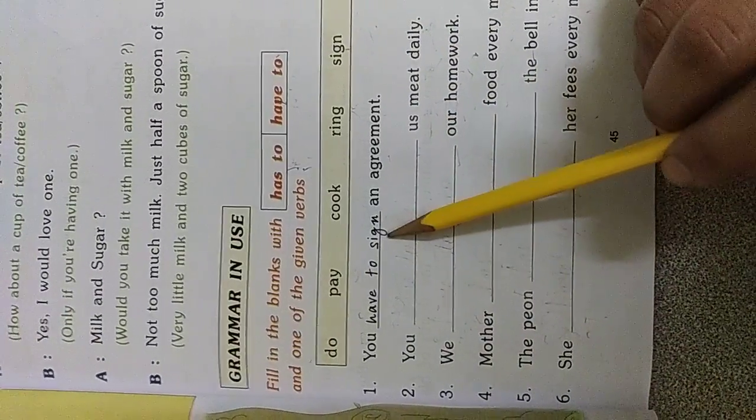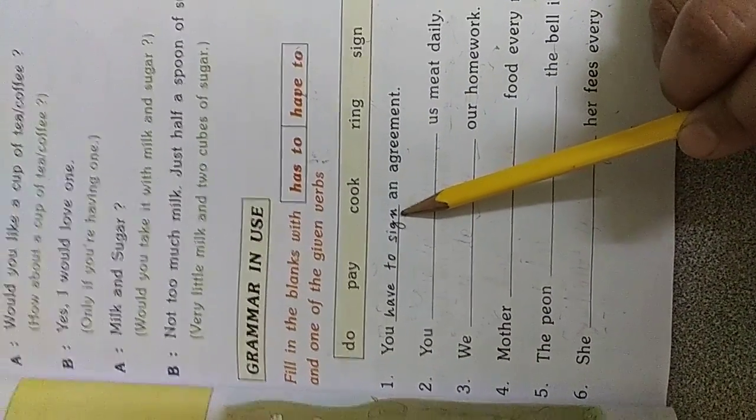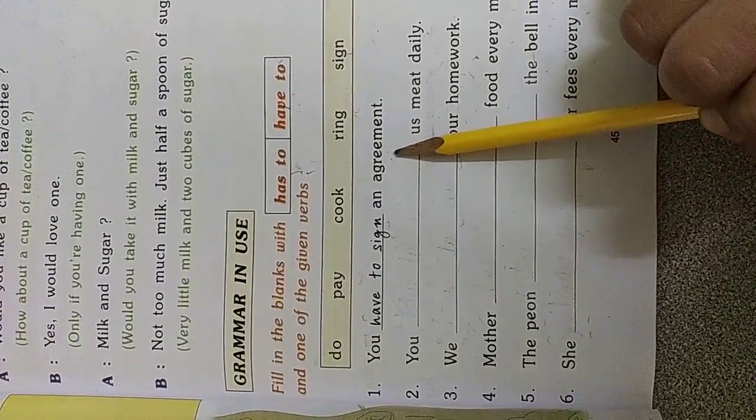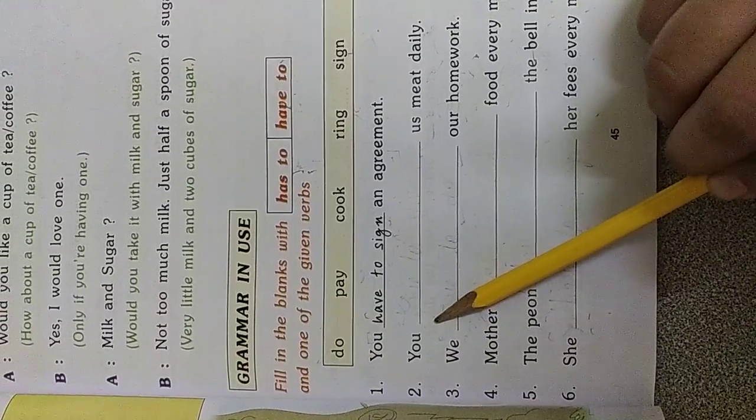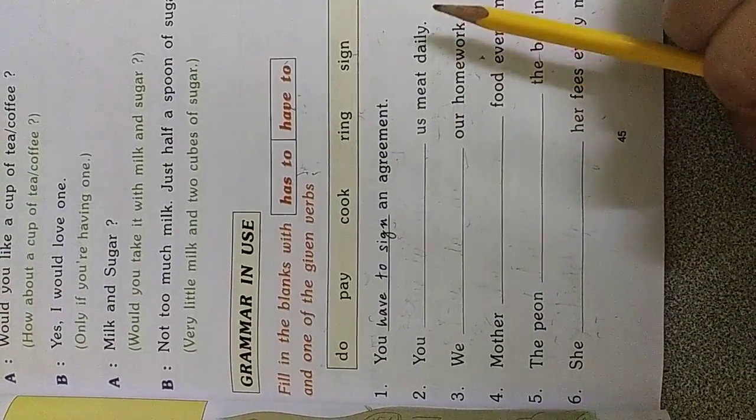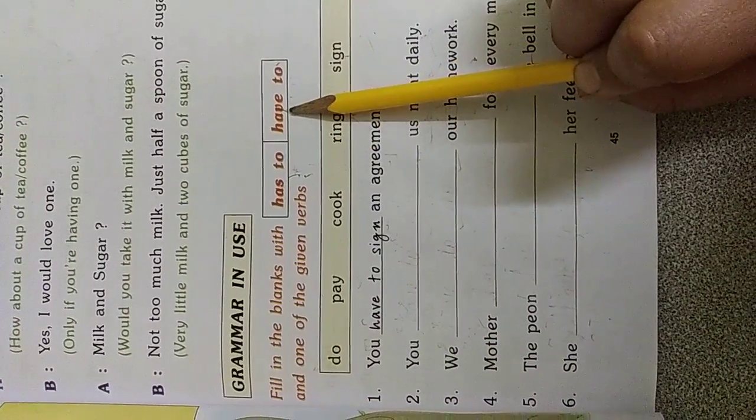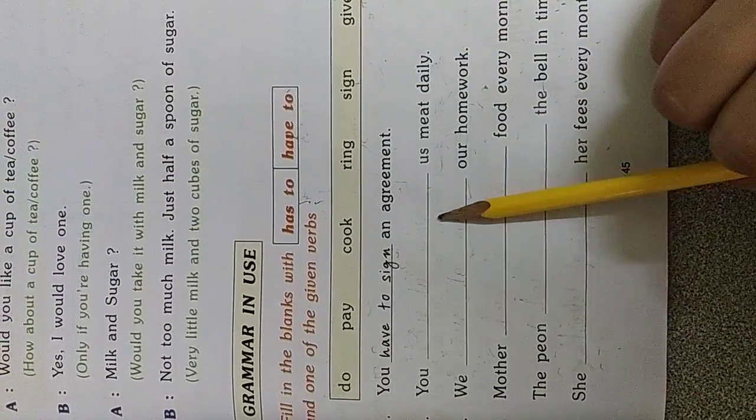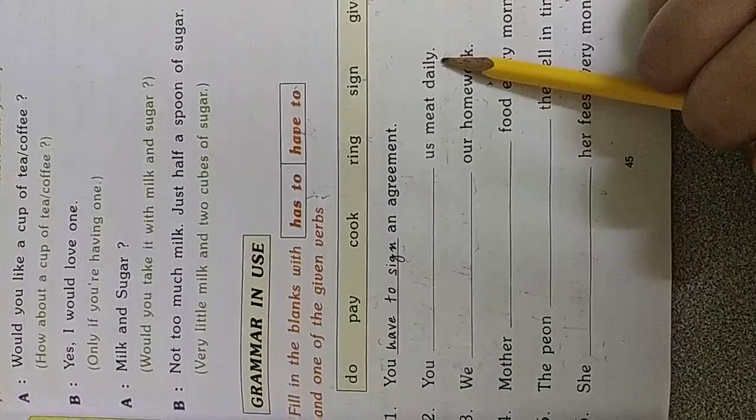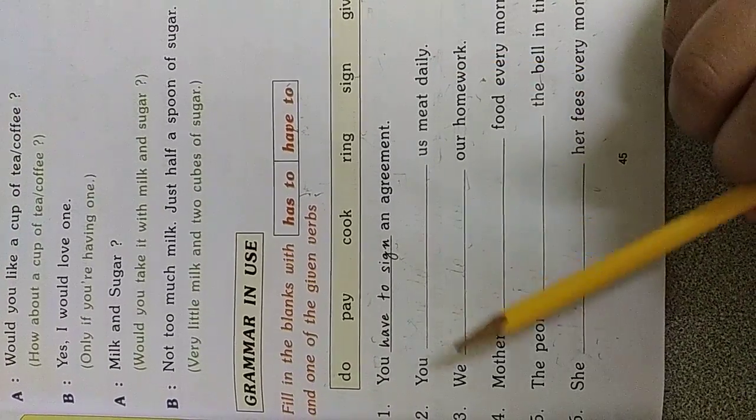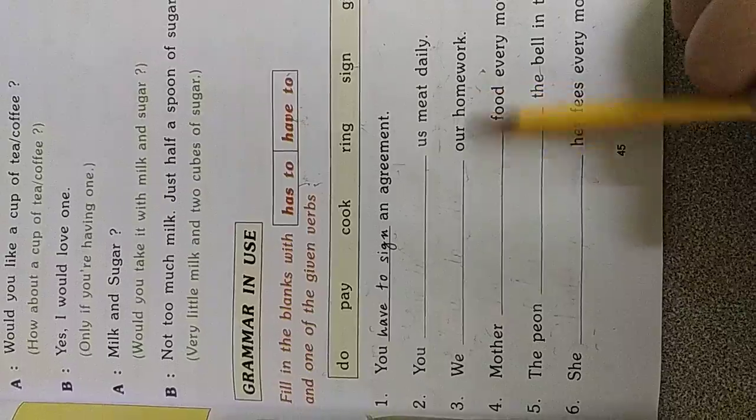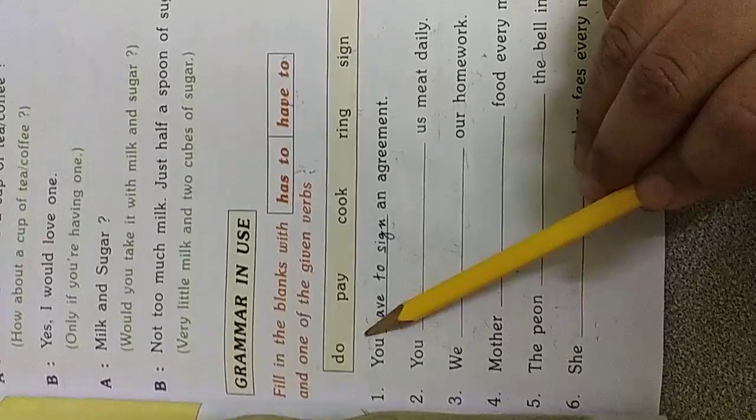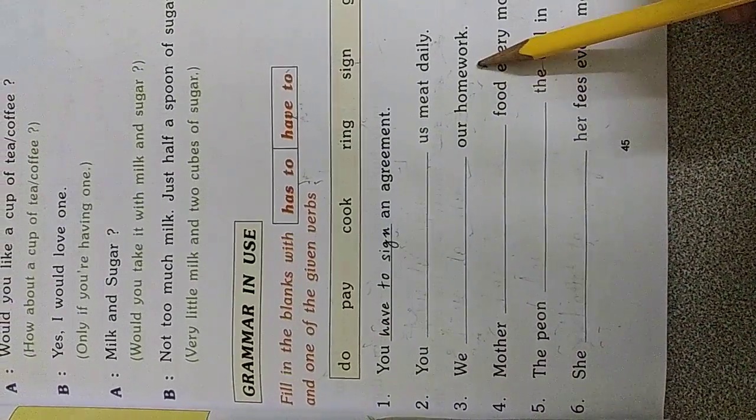You have to sign an agreement. It is your wish. If you want to sign, you can sign. If you won't, it is your wish. So, it is not compulsory. You have to sign an agreement. You dash give us meat daily. You have to give us meat daily.